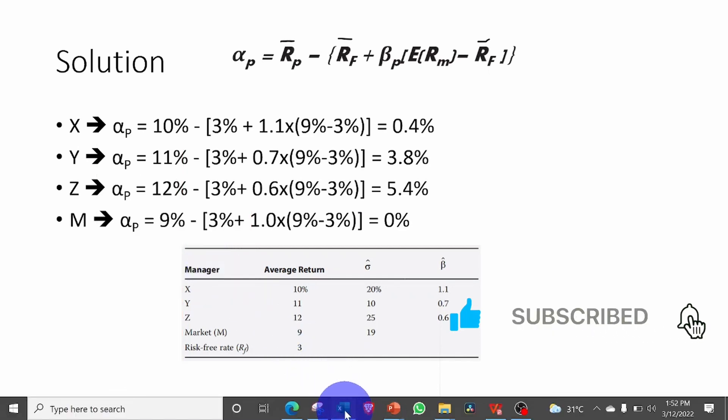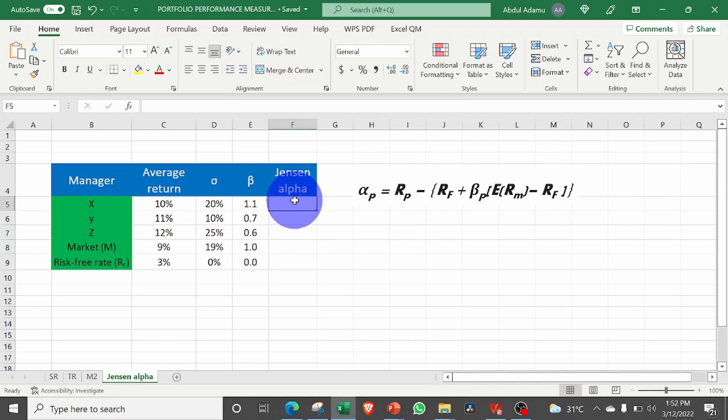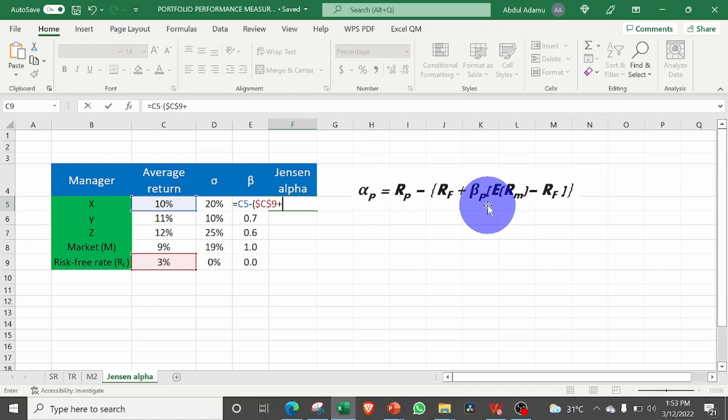If we go to our Excel now, you can see to calculate the Jensen alpha, this is the formula. This is equal to, we have the return which is 10% minus open bracket. So risk-free rate, this is 3%, I'm going to lock it. Plus the beta, the beta is E5. So E5 times open bracket, the return of the market is this. We are going to lock it also with F4.